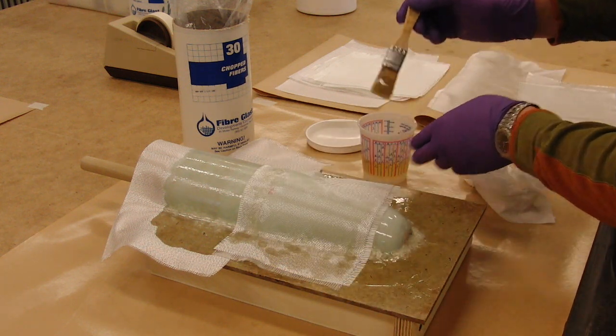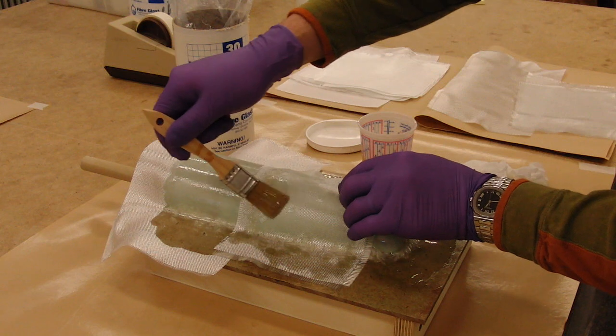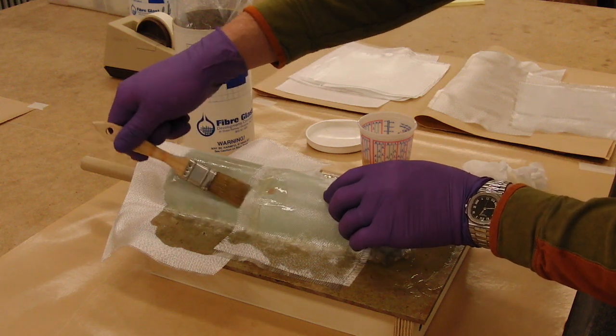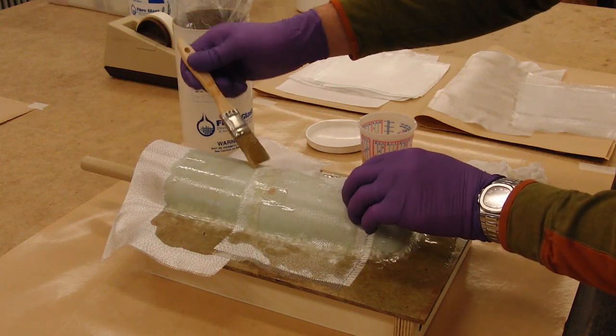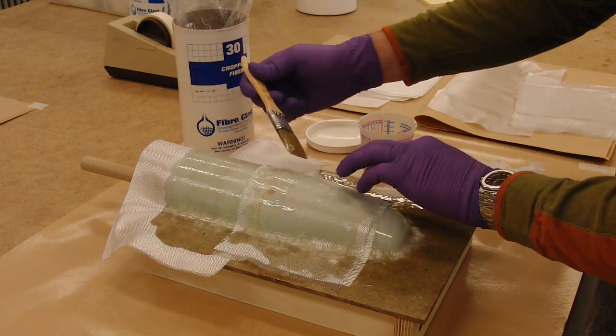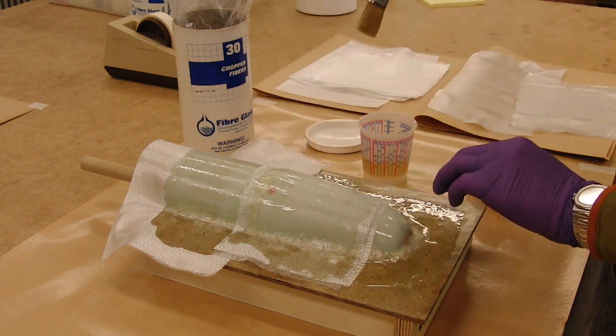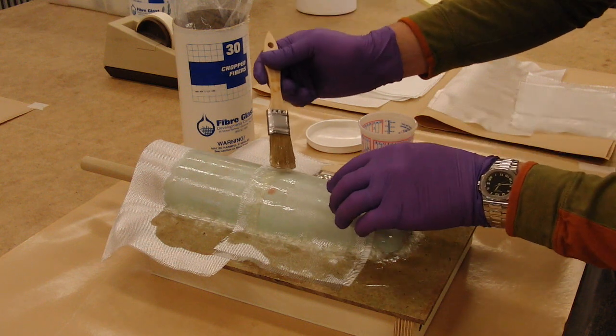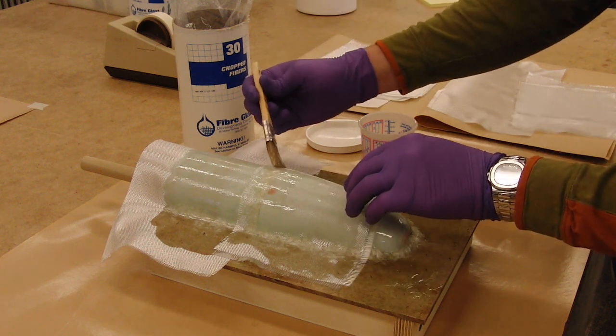Then we put on some more epoxy on any dry spots. And we'll just do this repeatedly until we get the full thickness that we want for the mold. Which again, should be about three times as thick as the part that you want to pull from it.